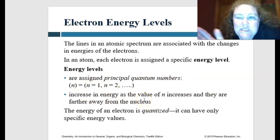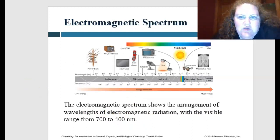There's an increase in the energy as the value of n increases, and they're farther away from the nucleus. The energy of an electron is quantized, and it can only have specific energy values.